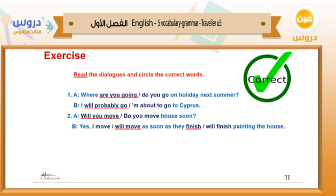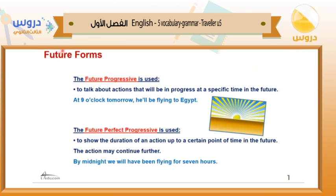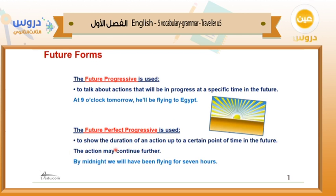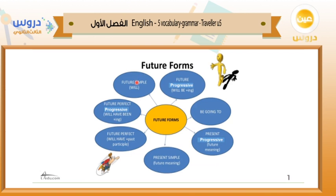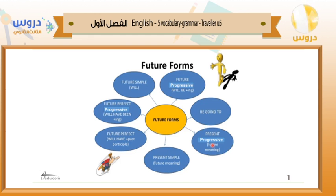The future progressive is used to talk about actions that will be in progress at a specific time in the future. For example: 'At nine o'clock tomorrow, he'll be flying to Egypt.' The future perfect progressive is used to show the duration of an action up to a certain point in the future — the action may continue further. For example: 'By midnight, we will have been flying for seven hours.' The table shows: future simple, future progressive, future perfect progressive, future perfect, and present progressive with future meaning.